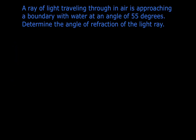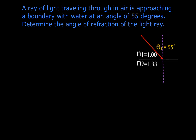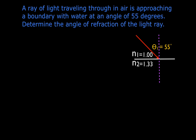Let's go through a couple of problems. We have a ray of light traveling through air and approaching a boundary with water, making an angle of 55 degrees — that's the angle of incidence with the normal line. We want to find the angle of refraction. Before I begin, I like to make a quick sketch of the situation: draw my boundary, draw my normal line, label the index of refraction for each side, draw the ray coming in at approximately 55 degrees, and label it theta1 = 55°.